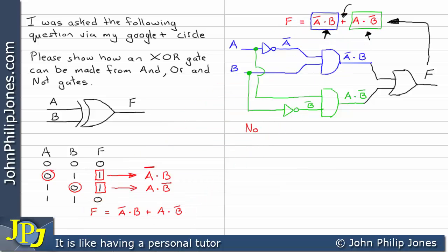This combinational logic circuit has a NOT gate here and another NOT gate here. It has an AND gate both here and here, and we also have an OR gate here. So what we have achieved is the production of an exclusive OR gate using AND, OR, and NOT gates, therefore answering the question: yes, you can make an exclusive OR gate using AND, OR, and NOT gates.